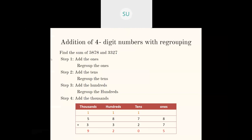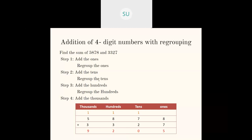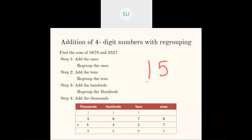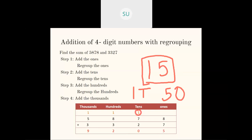The question is: find the sum of 5,878 and 3,327. The step is the same — you arrange the numbers in their place values and always start from the 1's place. So 8 plus 7 is 15. I cannot write 15 in the 1's place as it is a 2-digit number. So we separate it: 15 has 1 ten and 5 ones. We write 5 in the 1's place and carry over 1 to the 10's place.